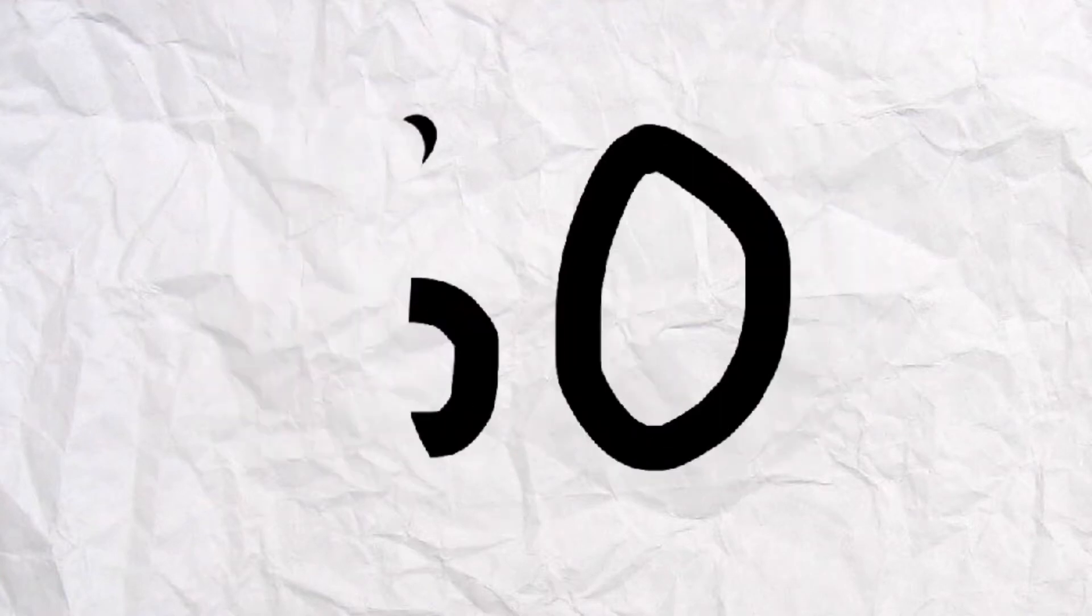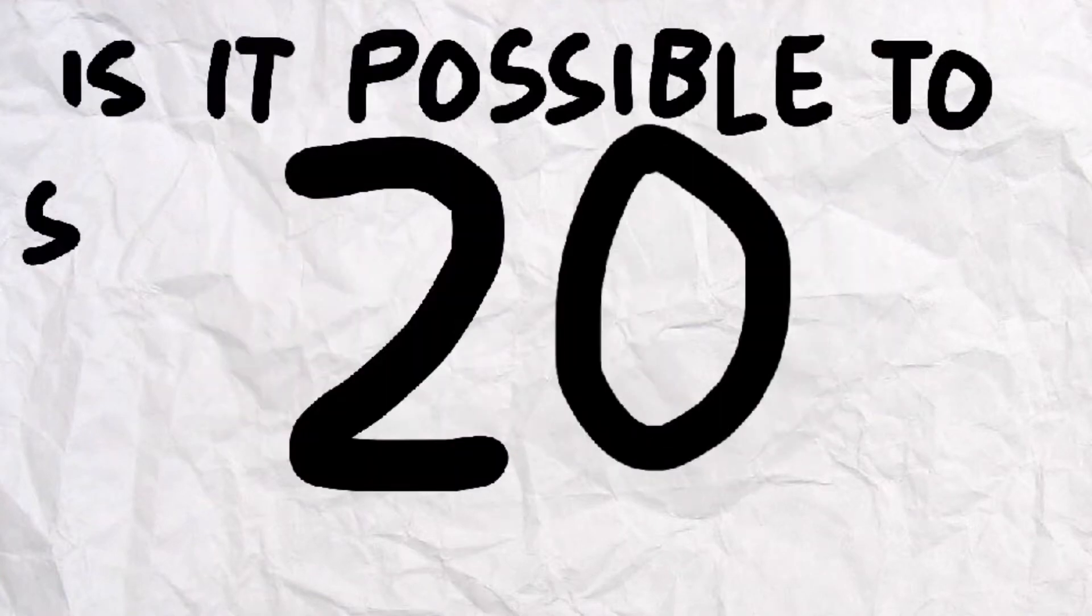But most speedcubers, those who solve for time, are making about 60 rotational moves. So where does this number come from, and how can you figure out how to solve a Rubik's Cube in 20 moves?